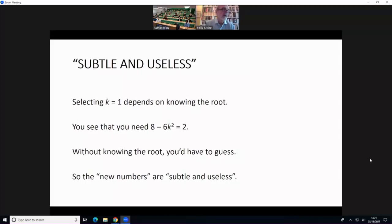Bombelli saw that this would work, but as he also recognized, his ability to choose an appropriate value depends on already knowing the value of the root. And because he knew that, he knew that 8 - 6k² would have to be 2. In general, without knowing the root, you'd just have to guess a value for the pertinent parameter. So he dismissed what he'd done as an apparent curiosity. Most of his contemporaries and immediate successors accepted that verdict as subtle and useless. That's what he called the new numbers. A few, however, continued to explore.